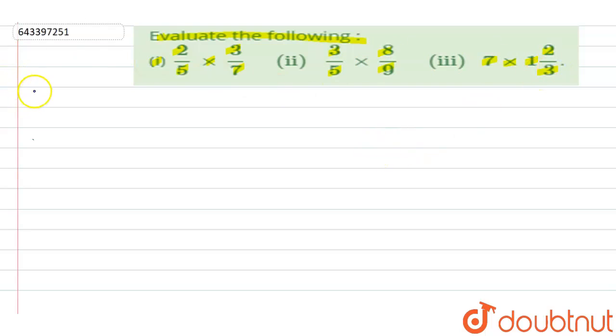In this question we have to multiply two fractions. First question is 2 upon 5 multiplied with 3 upon 7. When we are multiplying two fractions, if numerator and denominator can cancel each other then we'll cancel them, otherwise we just multiply numerator with numerator and denominator with denominator. So here 2 times 3 is 6 and 5 times 7 is 35.